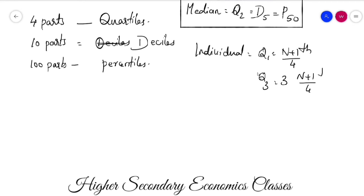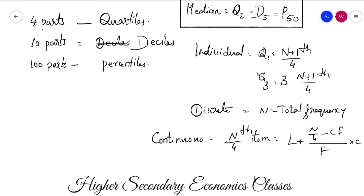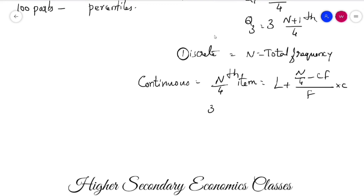For quartiles in discrete series, n is the total frequency. For continuous series, Q1 uses the formula: L plus (n/4 minus cf) divided by f, multiplied by c. Q3 uses: L plus (3n/4 minus cf) divided by f, multiplied by c.